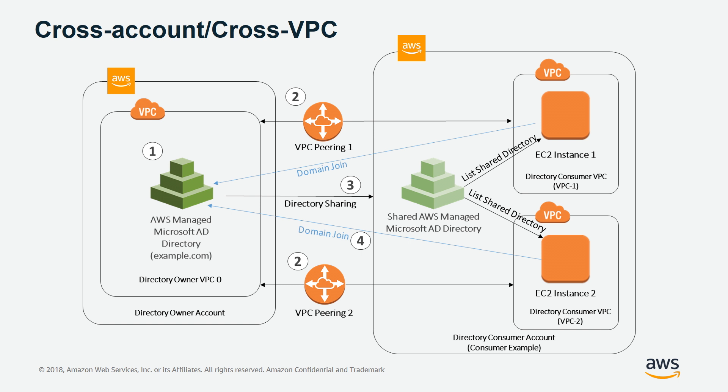We now made it possible for our customers to share a single directory with multiple AWS accounts using the Directory Services console or API. Directory Service sharing works at the account level, which also makes the directory visible to all VPCs within the accounts to which the directory has been shared. To domain-join EC2 instances to the directory seamlessly, you must also establish network connectivity between the VPCs where they are deployed.